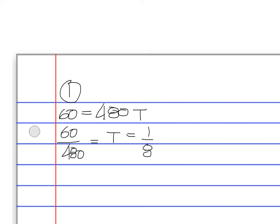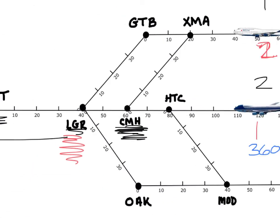6 goes into 48 eight times, so what we really end up with is 1/8 as a fraction — that's one-eighth of an hour. One divided by eight: what do we multiply by to put it into minutes? 60. So if we multiply 0.125 by 60, we come up with seven and a half minutes. Plane number one is going to take seven and a half minutes to get to CMH.